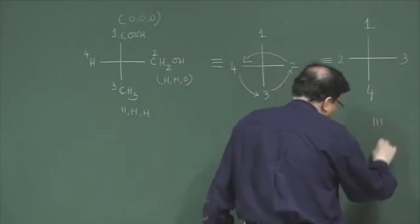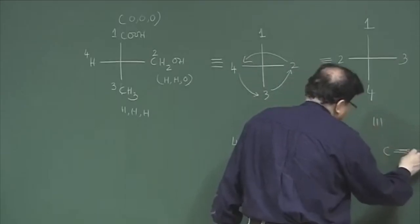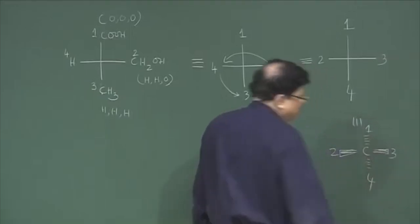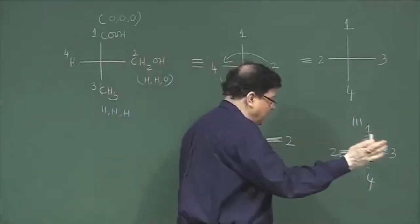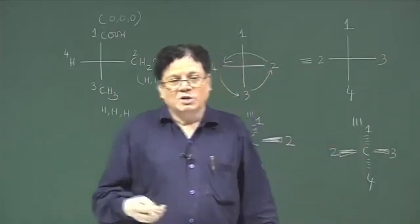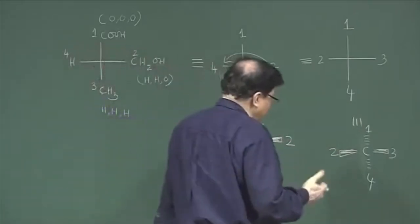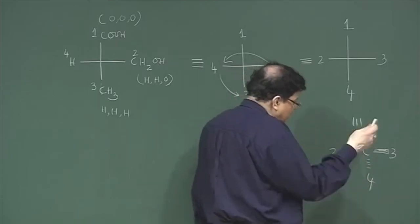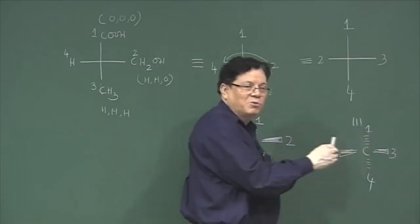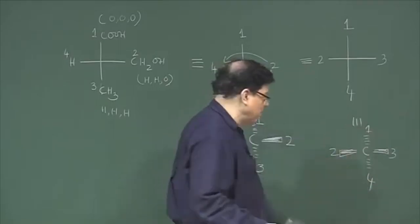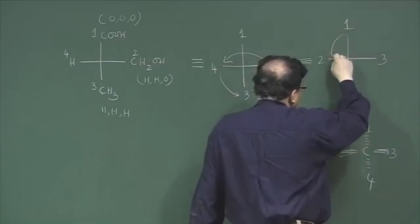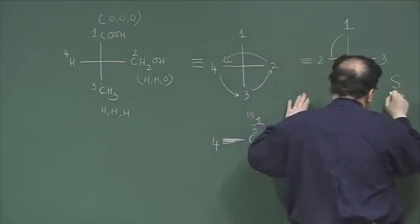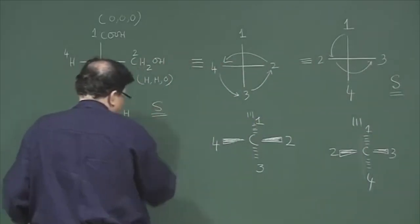If the fourth group is in the alpha position, that means it is away from you. If you convert it again into the wedge formula, the fourth group is away from you — the correct perspective. So if the fourth group is away from you, what you see going from 1 to 2 to 3 gives the actual direction and the correct configuration. Now, what is the configuration of this system 1 to 2 to 3? It is in the anticlockwise sense. So this is the S configuration. The result is that this molecule drawn for you was in the S configuration.